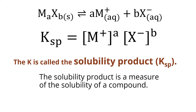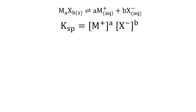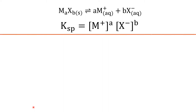The solubility product is a measure of the solubility of a compound. If we have a high value of Ksp, it means the concentration of ions in solution are high, which means the compound gives a lot of cations and anions in solution — meaning the compound is quite soluble in water. If the Ksp is low, it means the concentration of ions are also low, so the solubility of that compound is low.